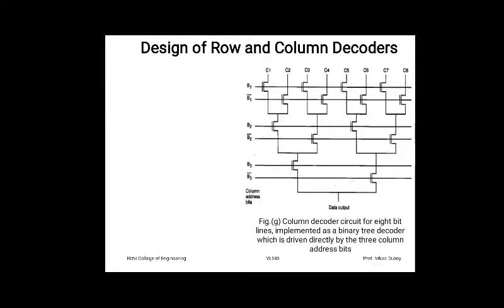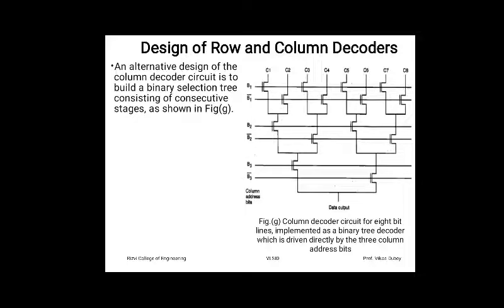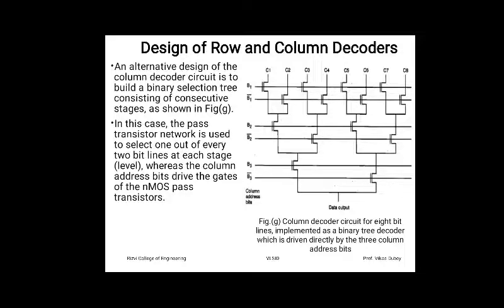To reduce the number of transistors, the column decoder is built as a binary selection tree consisting of consecutive stages. Counting the transistors in the tree: 2 + 2 + 4 + 6 + 8 + 10 + 12 + 14 gives 14 transistors total, compared to 24 in the straightforward method. This binary tree approach is a good way to implement the column decoder. In this case, a pass transistor network selects one out of every two bit lines at each stage, with the column address bit driving the gate of the NMOS pass transistor.